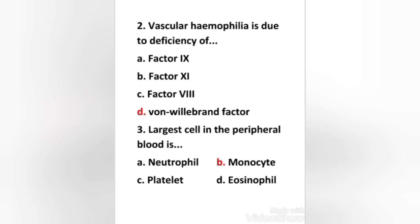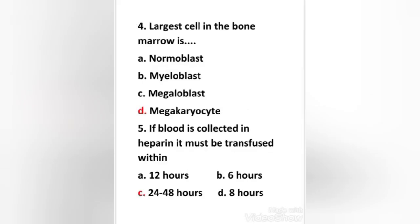Next question: the largest cell in the peripheral blood is neutrophil, monocyte, platelet, or eosinophil? The right answer is option B: monocyte. Monocytes are the largest cells of the peripheral blood, 15 to 18 micrometers in diameter, making up about 7% of leukocytes. The nucleus is relatively big and tends to be indented or folded rather than multilobed.